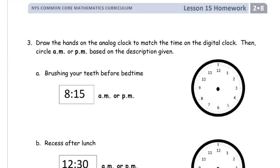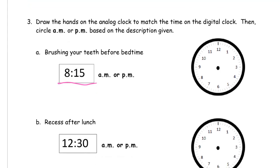Draw the hands on the analog clock, those are the round ones, then circle a.m. or p.m. based on the description given. So here, this looks, this is like sort of the digital time that you might see on a phone or something like that. Brushing your teeth before bedtime.